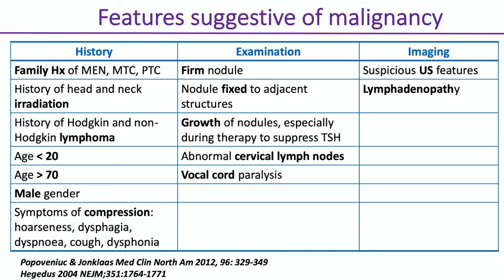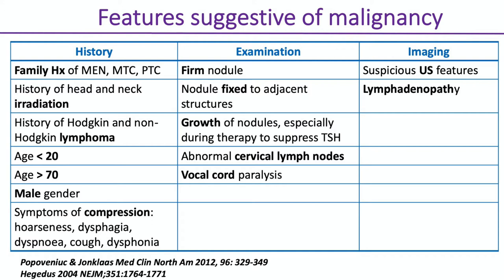When a patient presents with a thyroid nodule, we take a history. Certain features increase concern about malignancy: a family history, especially of medullary thyroid cancer; prior radiation to the neck — increasingly seen in survivors of childhood cancers such as leukaemias and lymphomas; a history of Hodgkin's disease or lymphoma per se also increases risk. Nodules in very old or very young patients are more concerning, and a nodule in a man warrants more concern than in a woman, even though nodules are less common in men.